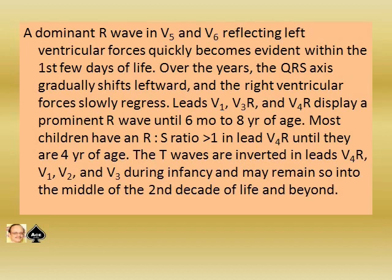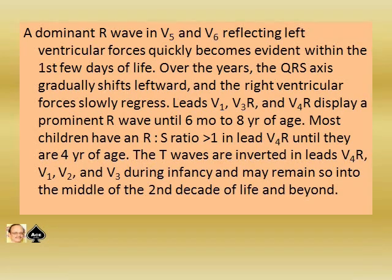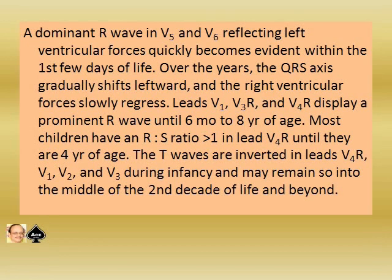Over the years, the QRS axis gradually shifts leftward and the right ventricular forces slowly regress. Lead V1, V3R, and V4R display prominent R-waves until six months to eight years of age. Most children have an R-S ratio more than one in lead V4R until they are four years of age. T-waves are inverted in lead V4R, V1, V2, and V3 during infancy, and they remain so into the middle of the second decade of life and beyond.